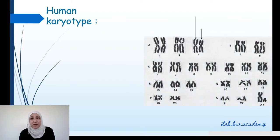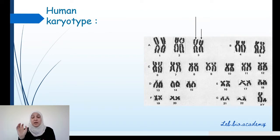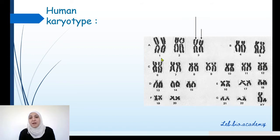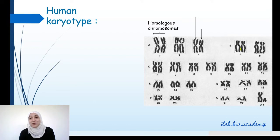So, human karyotype. If I take the micro-photography of a human, cut the chromosomes out, and arrange them according to the criteria we learned before, I will obtain this karyotype. Let's count the chromosomes: 2, 4, 6 — if you keep counting, you will obtain 46 chromosomes. These chromosomes are arranged in pairs.